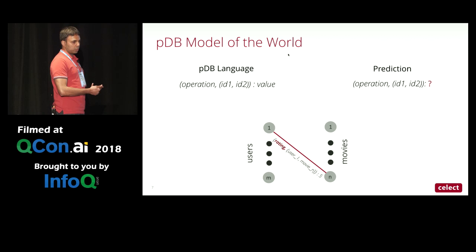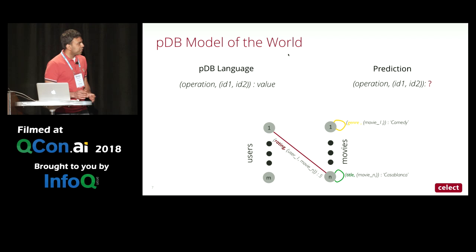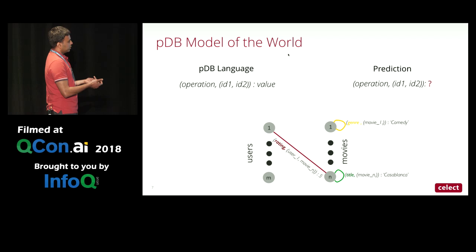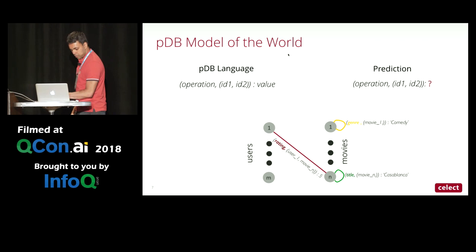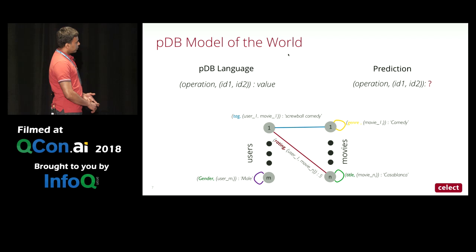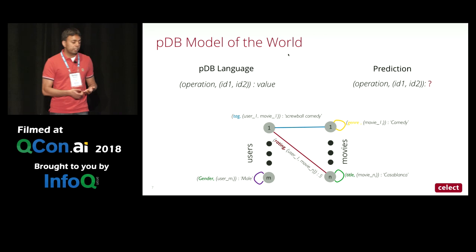For the movie sheet, there's only one entity involved — the movie — so the operation is either 'genre' or 'title,' and ID2 is null. ID1 is either movie one or movie N, for example: the genre of movie one is comedy. Similarly for users: the gender of user M is male. Tags look like ratings: operation is 'tag,' ID1 is user one, ID2 is movie one, and the value is a vectorized form of text like 'screwball comedy.'